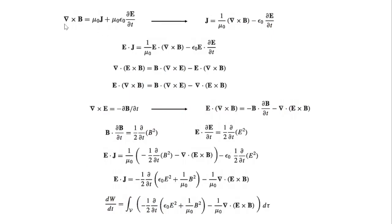If you recollect Maxwell's equation, curl of B equals mu naught J plus mu naught epsilon naught partial E by partial T. Rearranging the terms, you can write J equal to 1 over mu naught times curl of B minus epsilon naught partial E by partial T. Using the product rule in vector analysis, you can write the divergence of (E cross B) equal to B dot curl of E minus E dot curl of B.